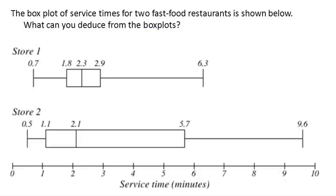Box plots can be particularly helpful when trying to compare two different data sets. In this case, we have two different fast food restaurants, two different stores. Let's see what we can deduce from these box plots. The first thing we might look at is the median.